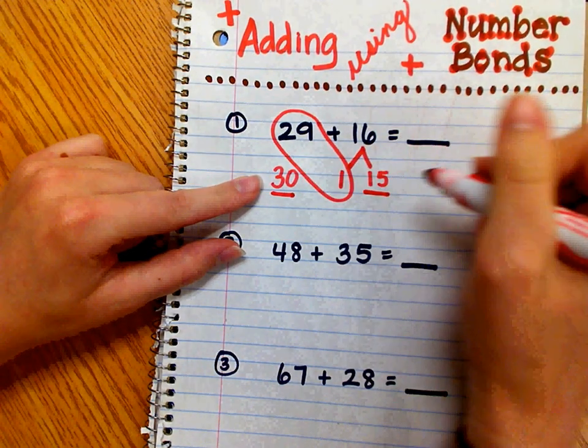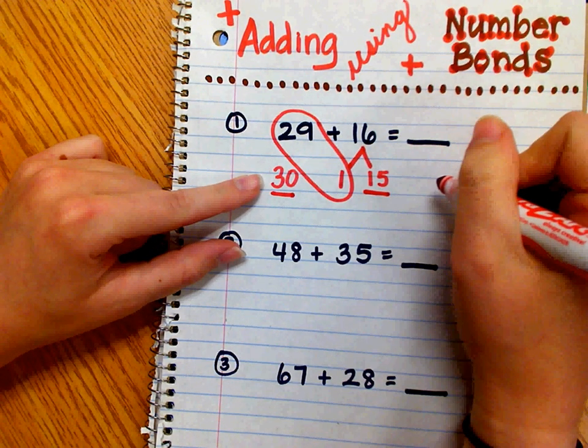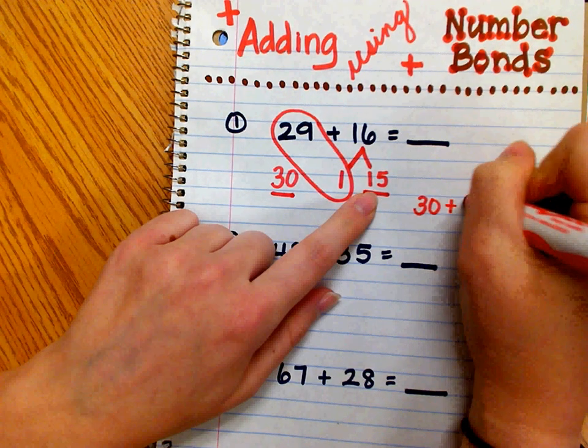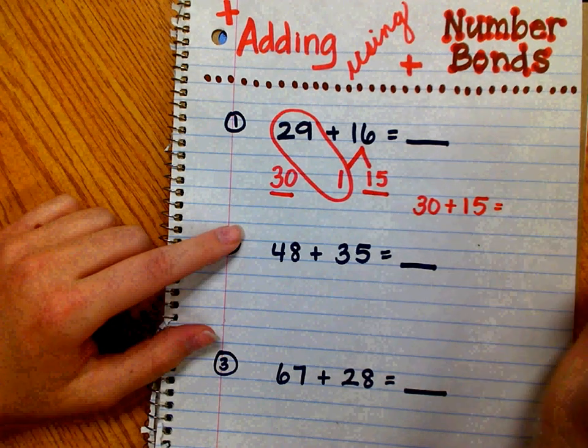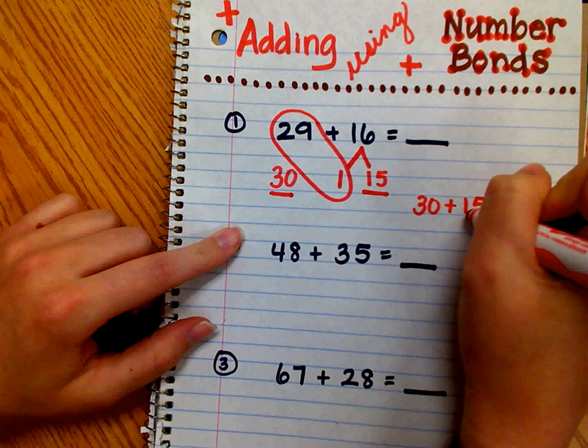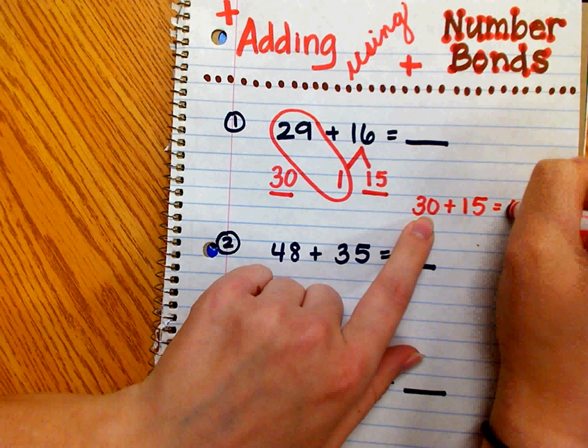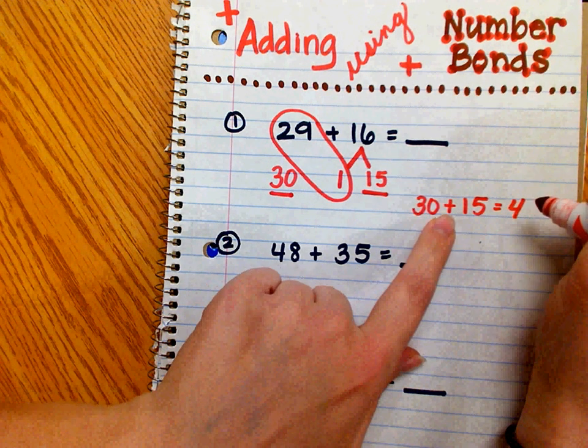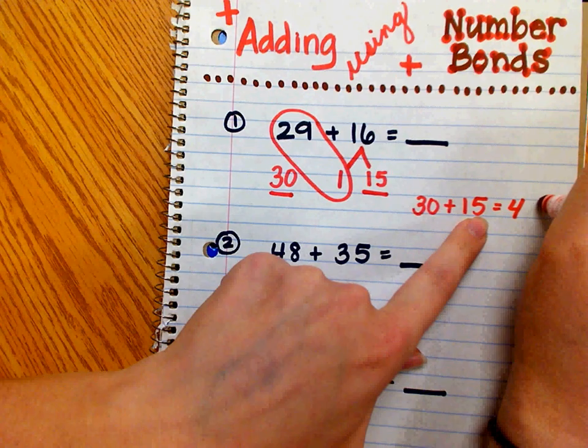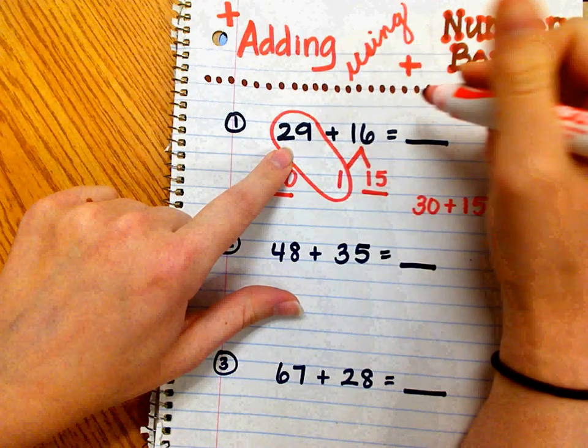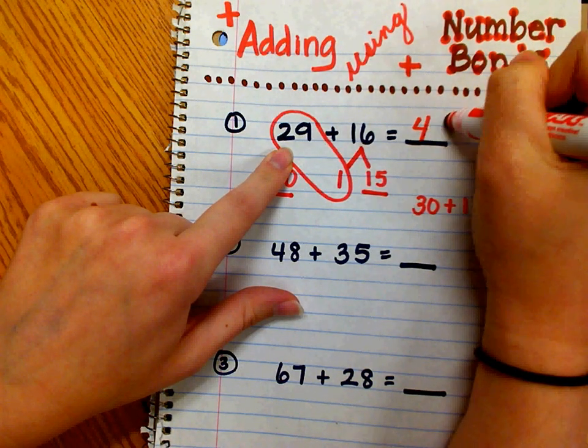So now I have two numbers that are much easier to work with and add mentally or in my head. I have 30 plus 15. 15 has 1 ten and 5 ones. If I add 3 tens to 1 ten, I'll have 4 tens. Then I have 0 ones plus 5 ones is 5. So 30 plus 15 is 45. So I know 29 plus 16 is 45.